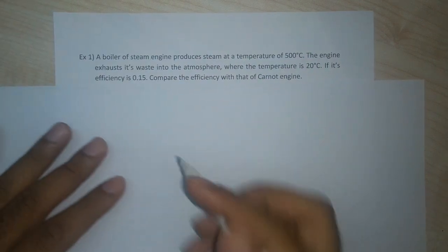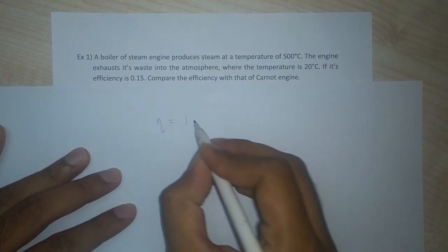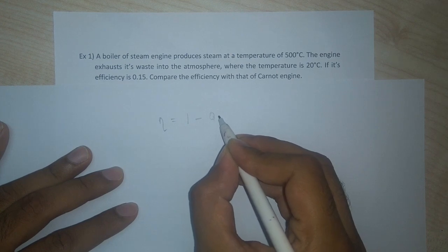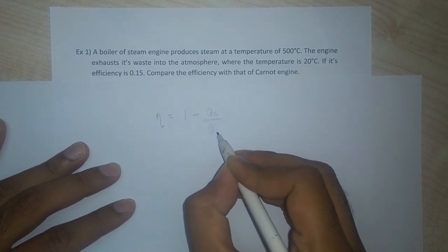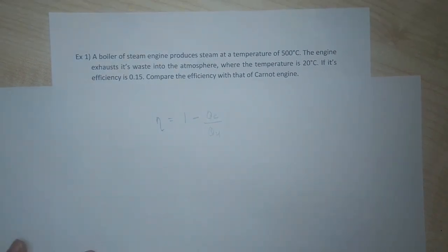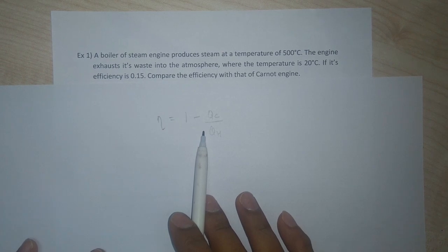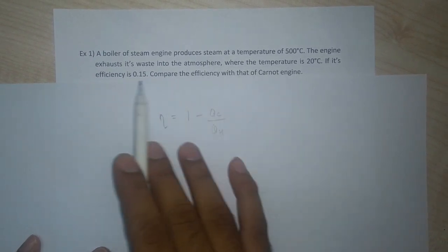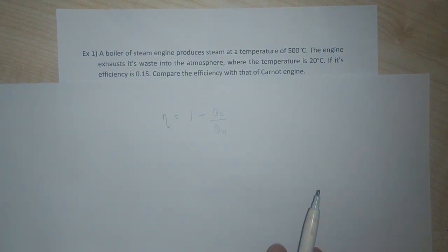The efficiency of a steam engine or any engine is nothing but 1 minus Q, the heat rejected to the cold reservoir, divided by the heat taken from the hot reservoir. This efficiency equation is valid for any engine, but what we are given is the efficiency of the steam engine and we are told to compare it with the efficiency of the Carnot engine.